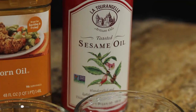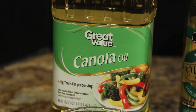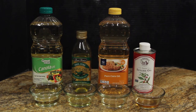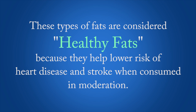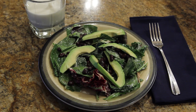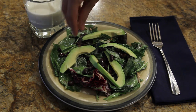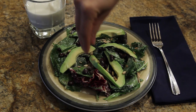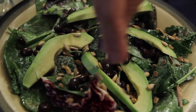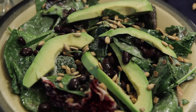Plant oils such as sesame oil, corn oil, canola oil, and olive oil are high in poly and monounsaturated fats. These types of fats are considered healthy fats because they help lower the risk of heart disease and stroke when consumed in moderation. Nuts and seeds, avocados, and vegetable oil also contain polyunsaturated and monounsaturated fats.